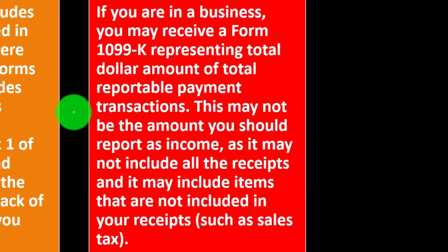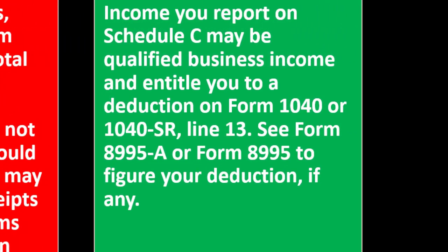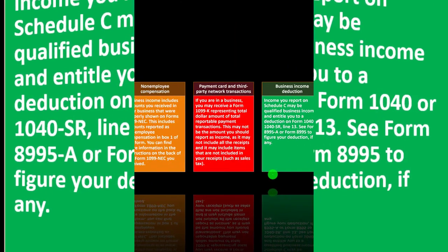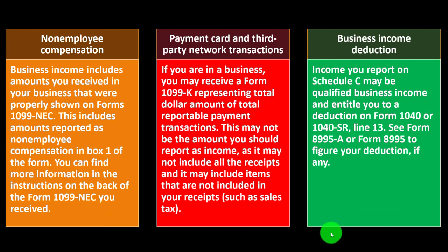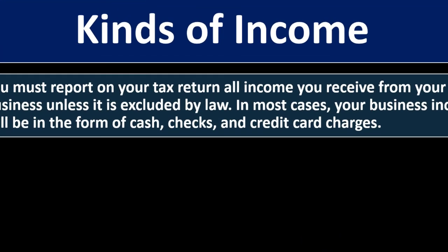Your net income might be much lower once expenses are applied. The 1099-K may not include all receipts, and it may include items not in your receipts, such as sales tax. Also, income you report on Schedule C may be qualified business income and entitle you to a deduction on Form 1040 or 1040-SR, Line 13. See Form 8995A or Form 8995 to figure your deduction, if any.